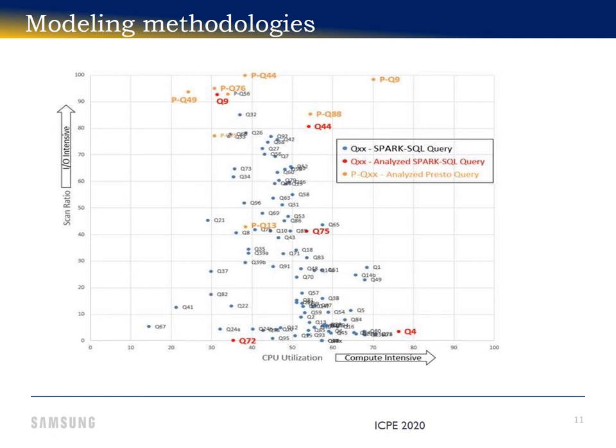This grid shows queries' CPU utilization — less CPU to more CPU — and scan ratio — less to more. The ones on top are I/O intensive. However, we also selected some queries from the middle and the bottom as a control group.